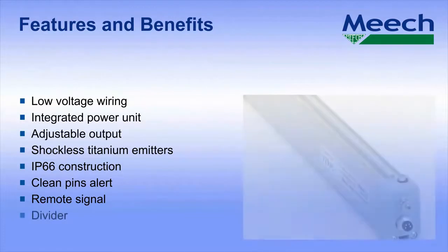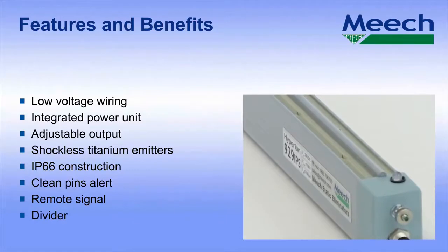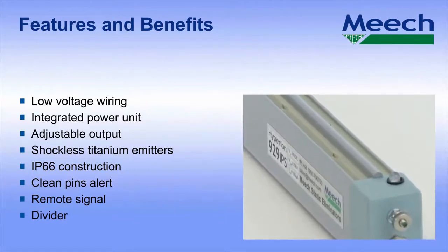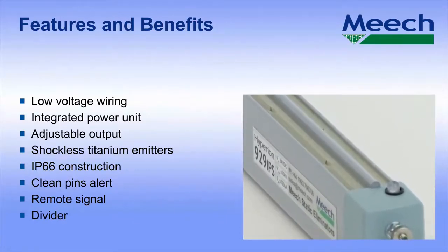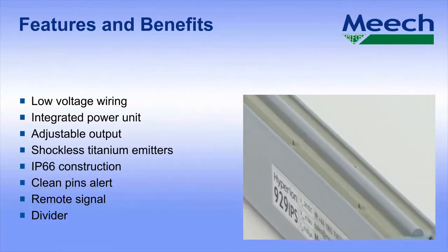The divider. The 929 IPS needs to be able to operate in dirty factory environments. To minimize the impact of contamination and to maximize the interval between cleaning, the bar features a divider between the positive and negative emitters.